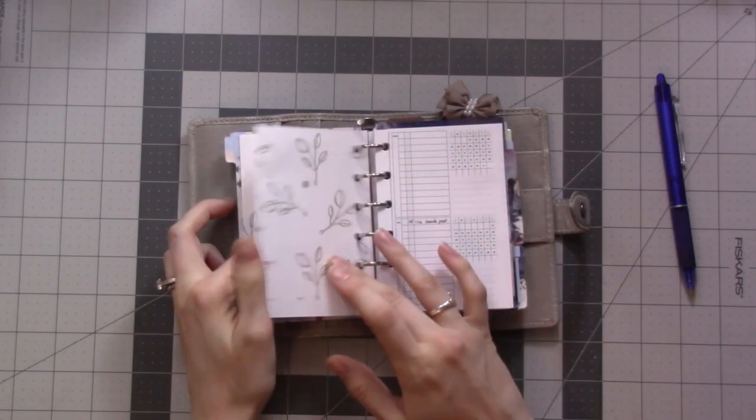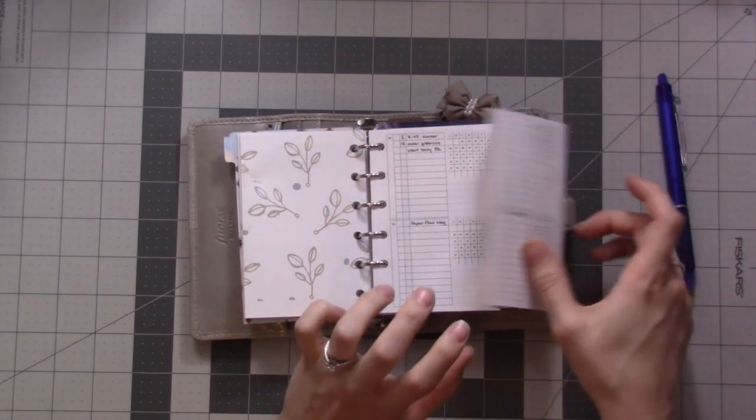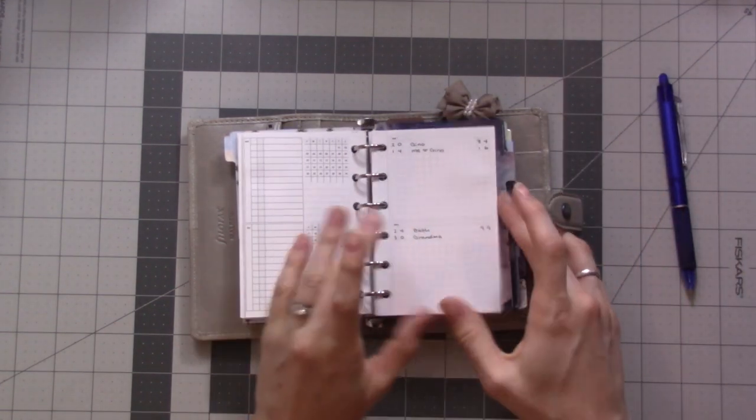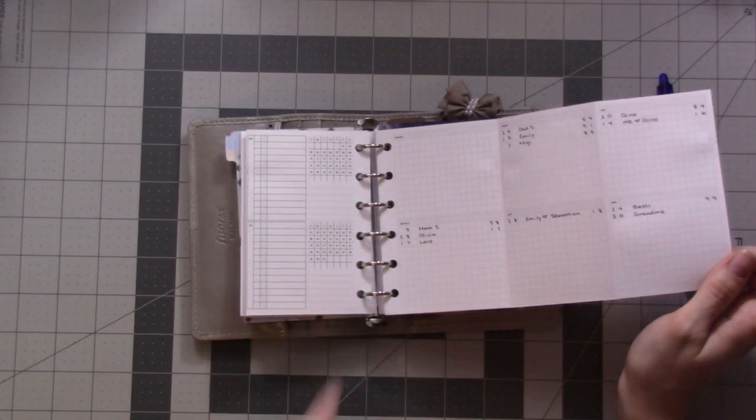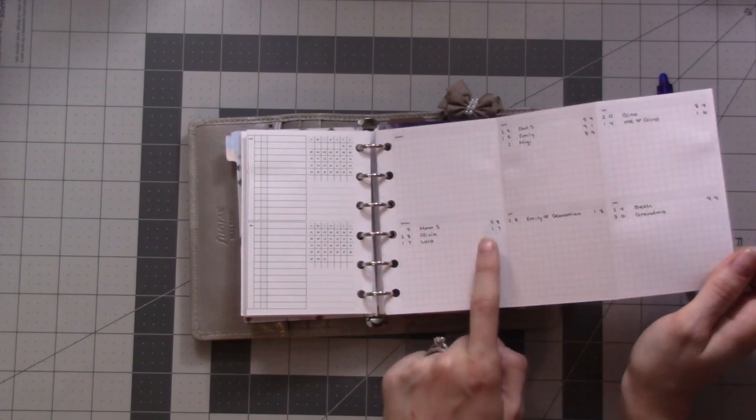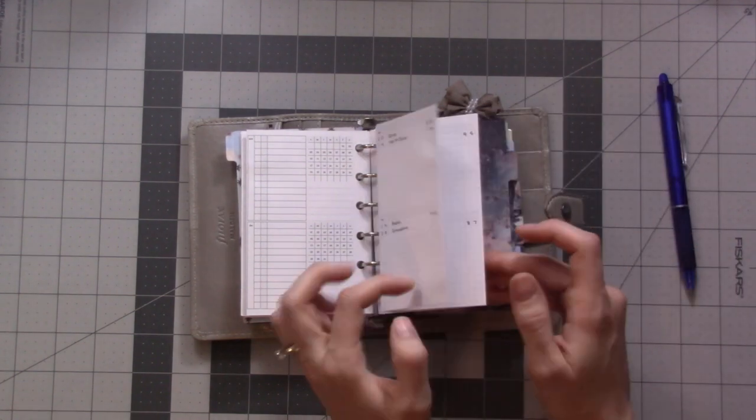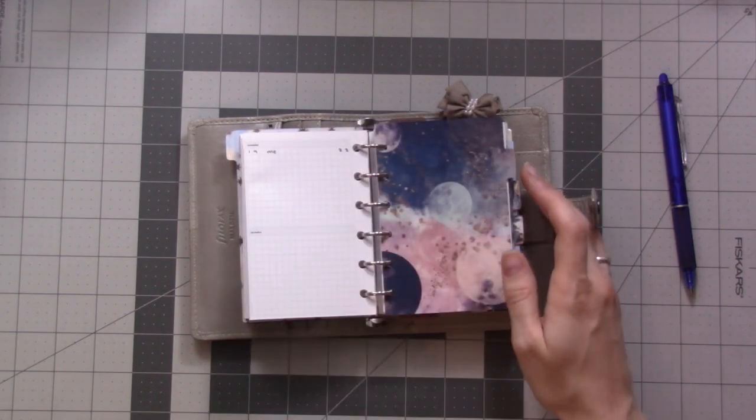I've got my monthly just for the one month and then this is the future log for 2019. I'll use that to set up January. Then this is a list of birthdays. Each one just has the date, who it is, and what year they were born if I know or if it matters.